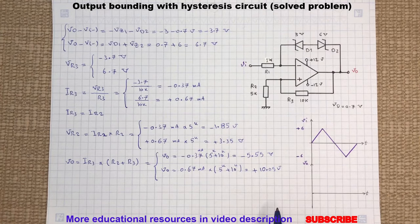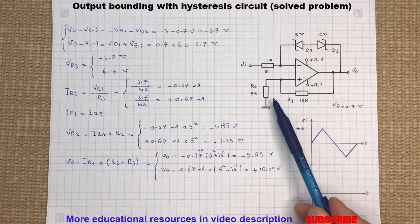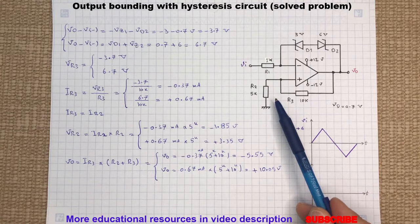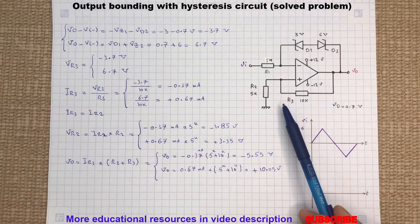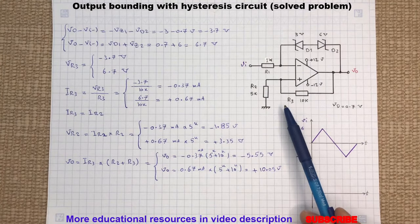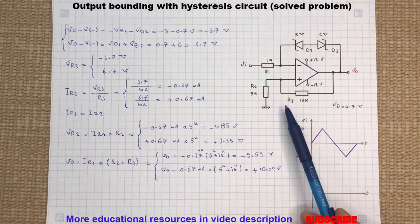As you can see here, the voltage across the resistor R2 is the same as the voltage at the non-inverting terminal. This voltage is called the trigger point, which can determine the state of the output.